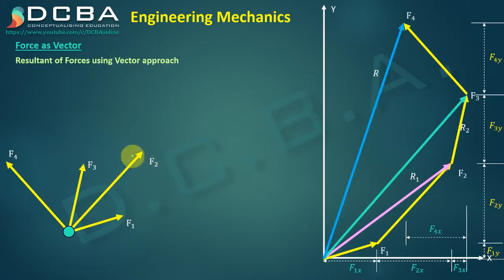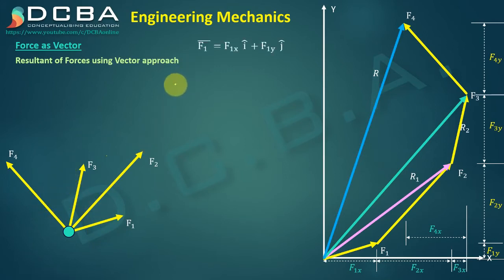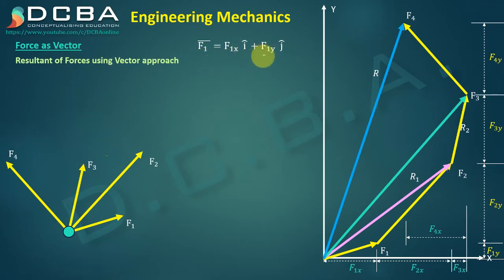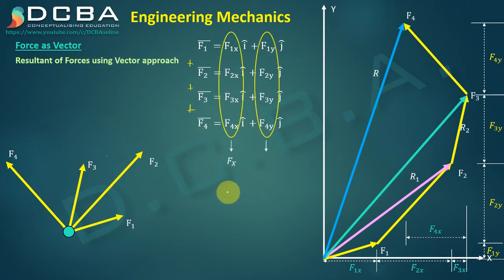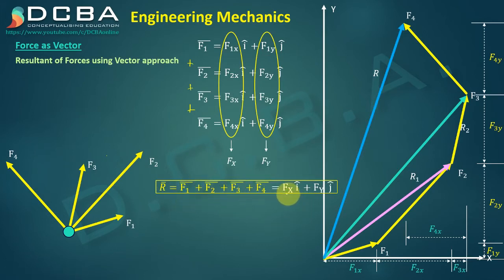Now, how do we apply this vector approach to several forces? If we have F1, F2, F3, and F4, we first represent each force in its vector form: F1 vector equals F1x·i cap plus F1y·j cap, and similarly for F2, F3, and F4. The resultant of all these forces is simply the addition of all these vector terms, giving R equals Fx·i cap plus Fy·j cap.